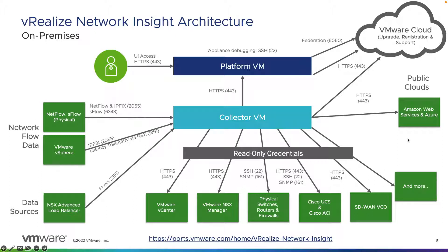We also have integrations with public cloud and VMware Cloud, which largely utilize API calls to pull specific data from those platforms, including flow records. For upgrade registration and support, and also if you're running federation — federating multiple deployments of vRealize Network Insight into a single instance — federation will utilize port 6060 to communicate with the various different VMware Cloud platforms. You can click the link shown here, which will take you to the vRealize Network Insight install guide showing the various ports used for every product we support integration with.